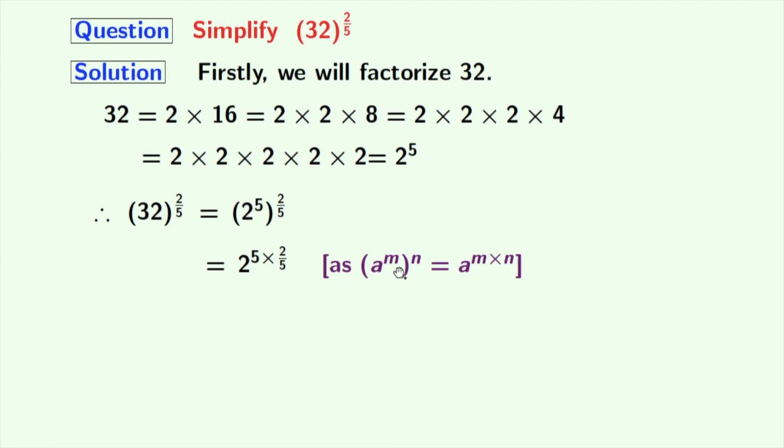We have used the rule: a to the power of m, whole to the power of n, equals a to the power of m times n. Here, a is 2, m is 5, and n is 2/5.